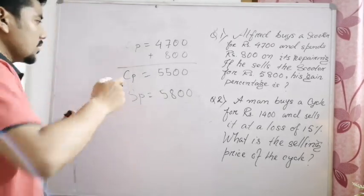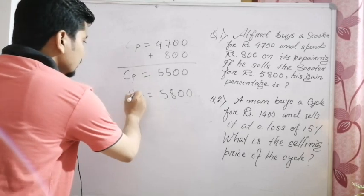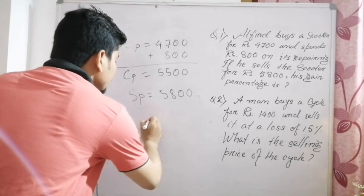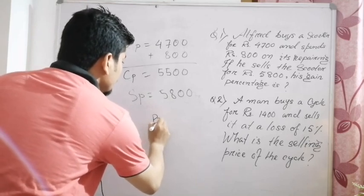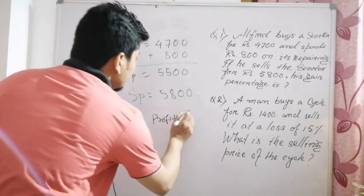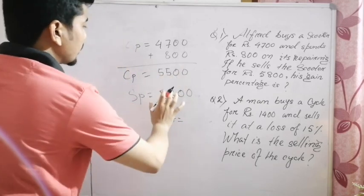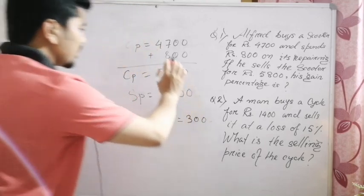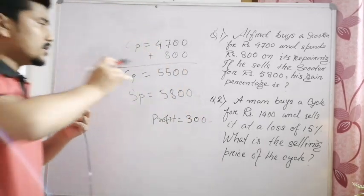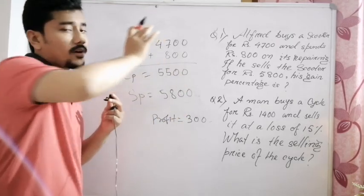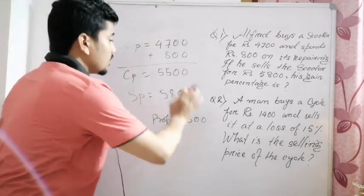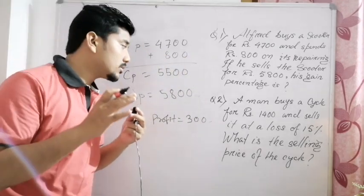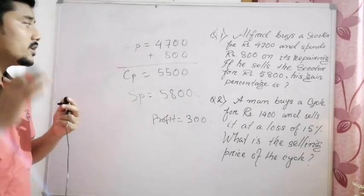The cost price is Rs. 4700 plus Rs. 800 on repairs, so the total cost price is Rs. 5500. The selling price is Rs. 4800. Since the selling price is less than the cost price, this is a loss. The loss is Rs. 5500 minus Rs. 4800, which equals Rs. 700.